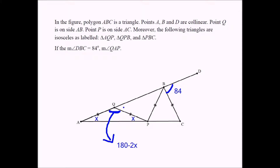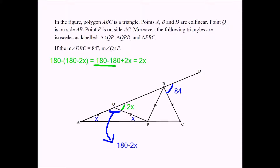What about this angle? This angle must be 2X. This has to be 2X because they form a linear pair: 180 minus (180 minus 2X). The 180s cancel, and you're left with 2X.